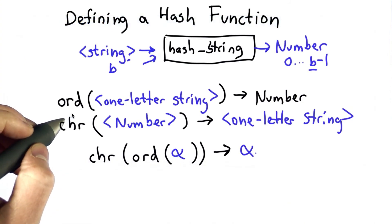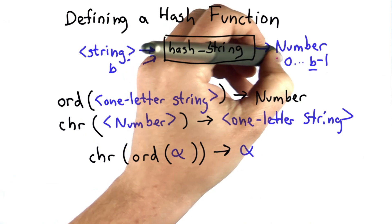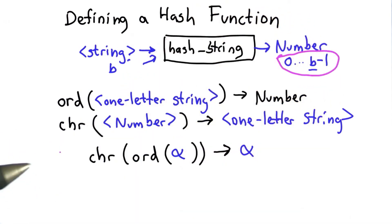So with ord we have a way of converting strings to numbers, converting single character strings to numbers. The other property we need our hash function to have is that the output number is always between 0 and b-1. We need it to be in that range because we're going to use that to index the list to find the bucket where that string belongs.